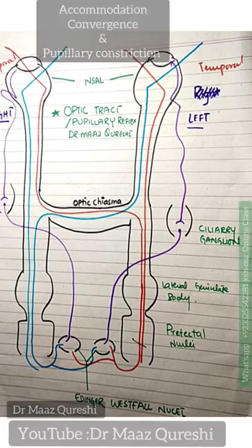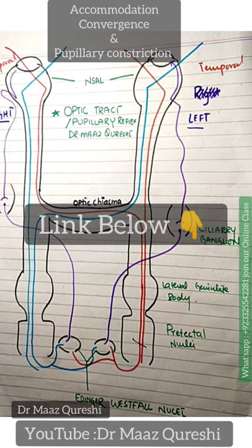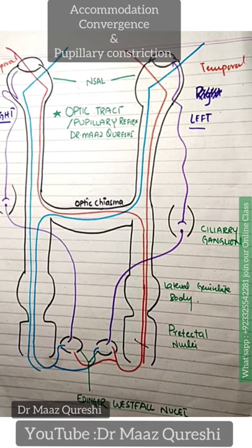Accommodation, convergence, and pupillary constriction — what is Argyle Robertson syndrome, Horner syndrome, what is Marcus Gunn pupil. We will cover these topics so that you can understand the optic tract.